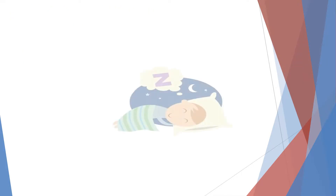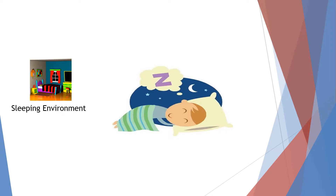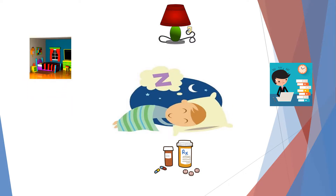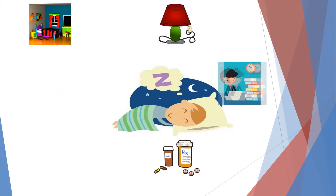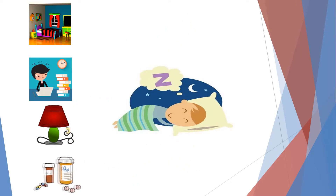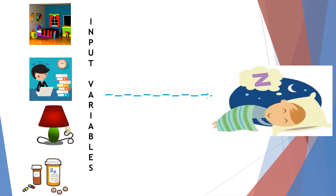Let us consider a simple experiment in which we want to find out the effects of several factors on the quality of sleep. We consider sleeping environment, room lighting, work shift, and medication as variables that greatly influence the sleeping habit of a person. The sleeping environment, the work shift, the room lighting, and the medication are what we call the input variables in the experiment, while sleep quality is the output response.